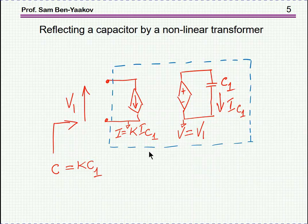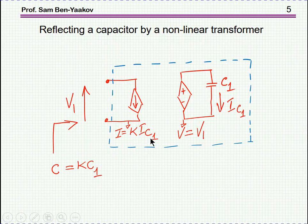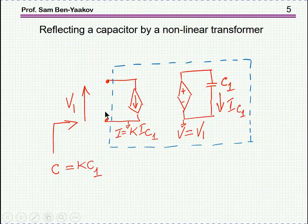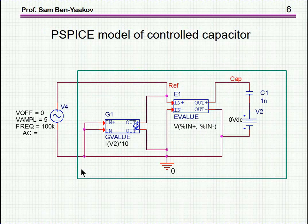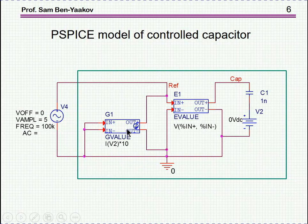Here it is in a more graphical way. These two dependent sources act like a transformer — a non-linear transformer. This is a current source defined as K times IC1, that is K times the current of C1. This is a voltage-dependent source where V equals V1, the voltage at the input. As we look into the input terminals, we see a capacitor which is K times the size of C1. Here is the P-SPICE implementation: the G value is a dependent current source, and the E value is a dependent voltage source that translates the voltage.